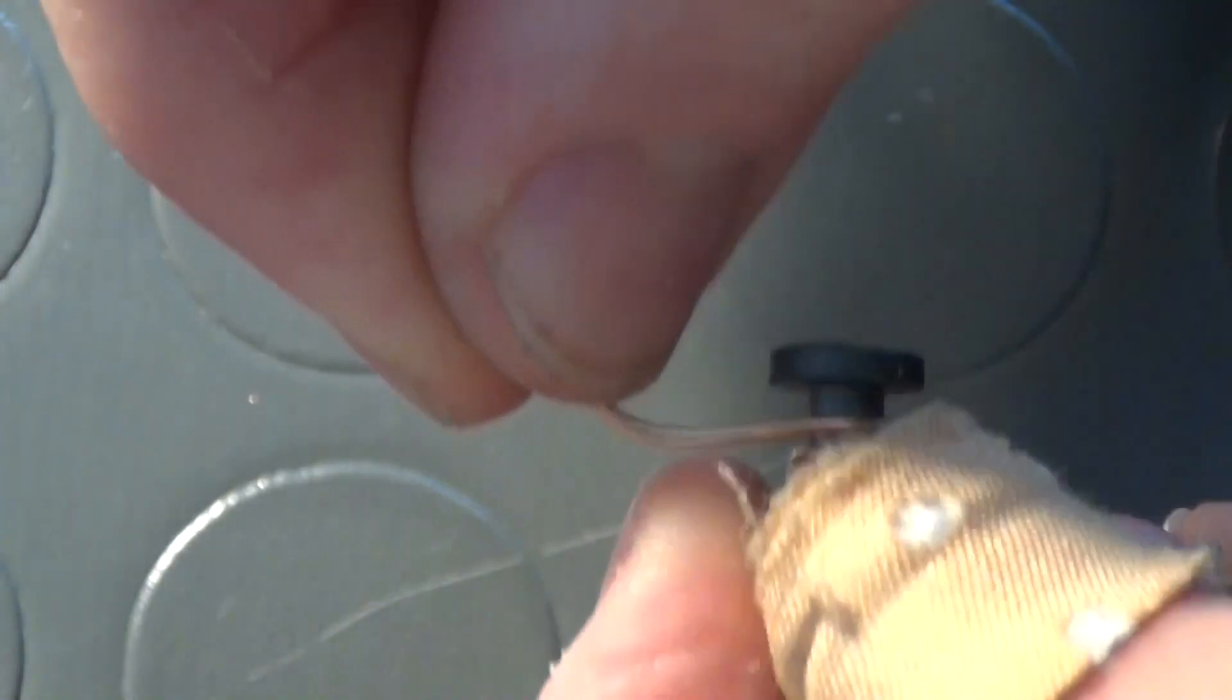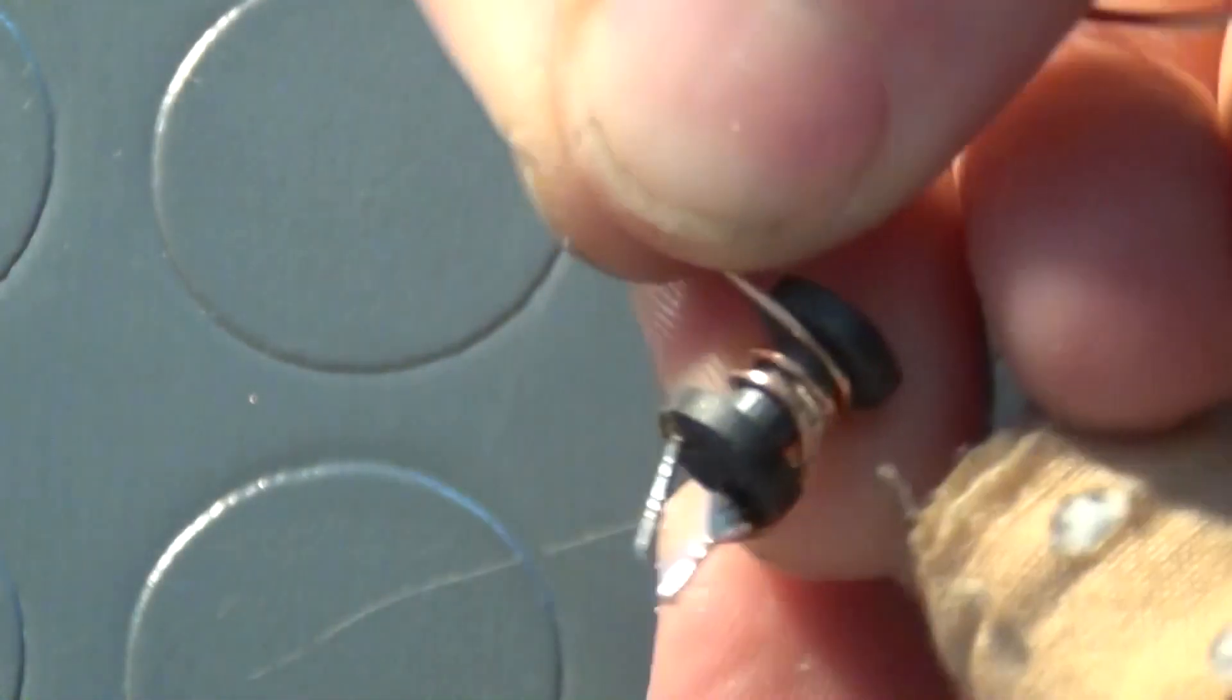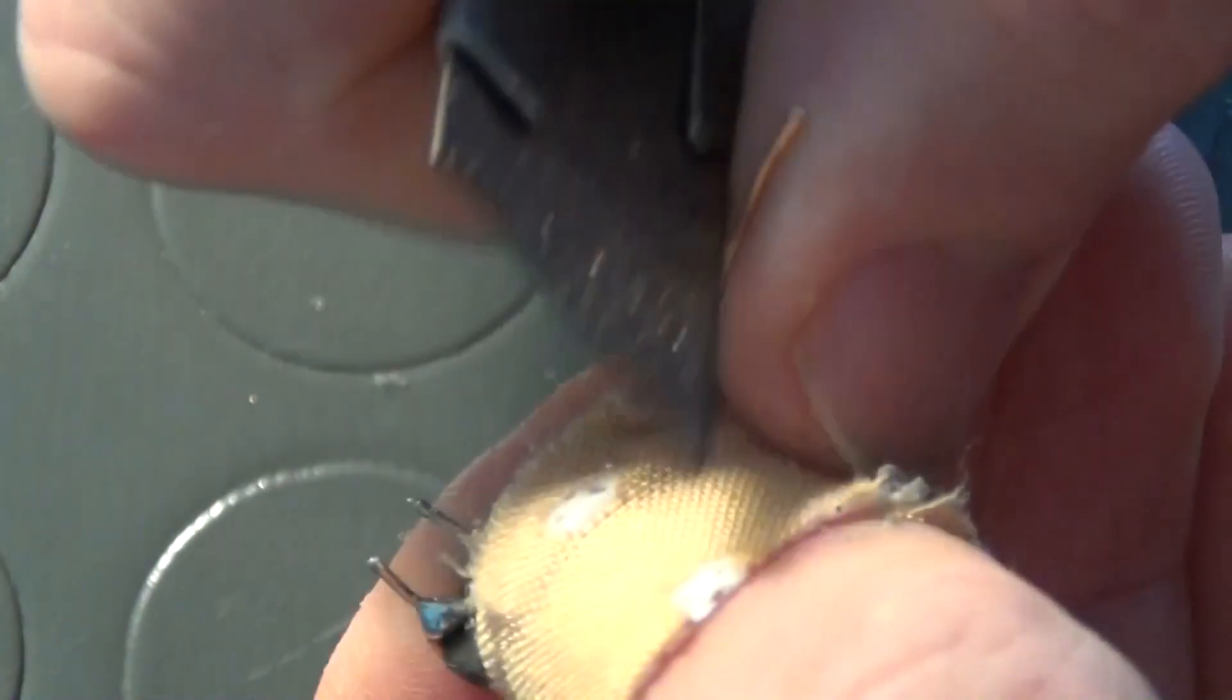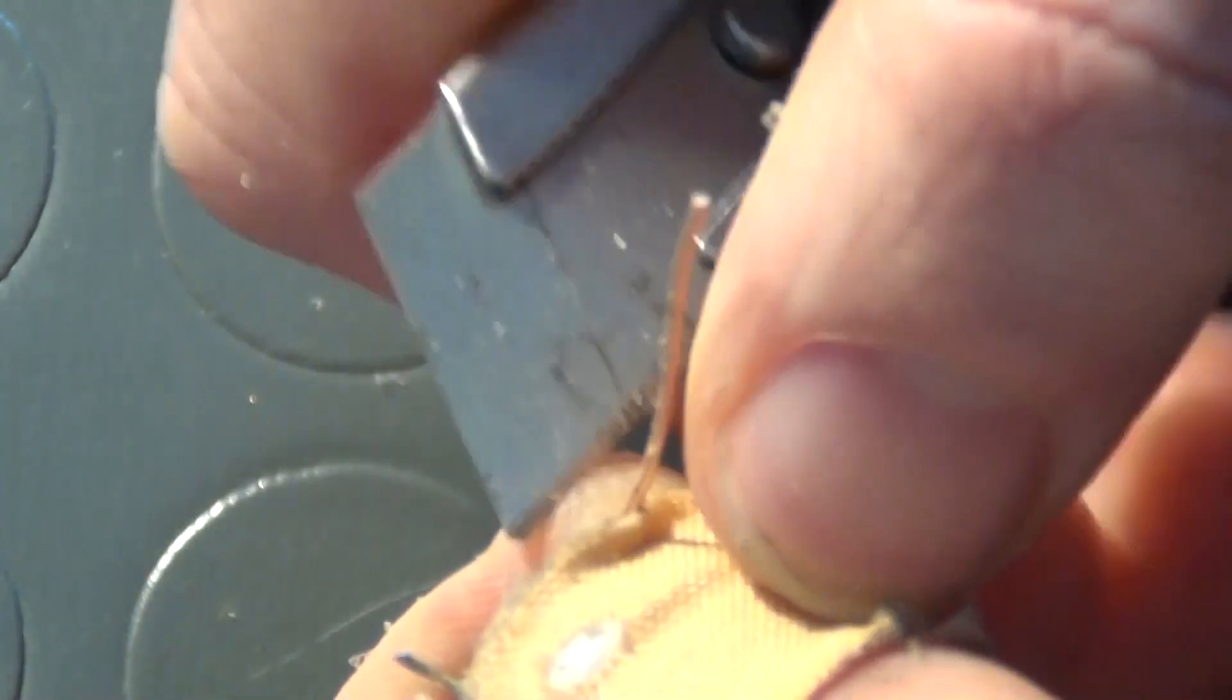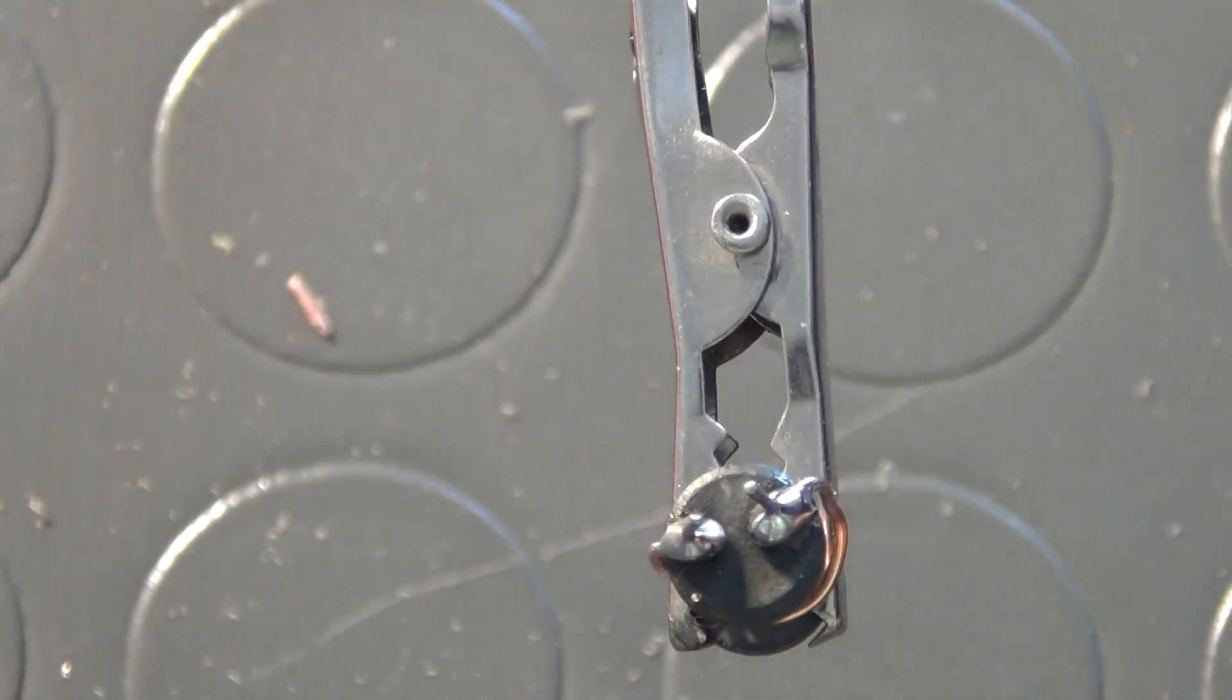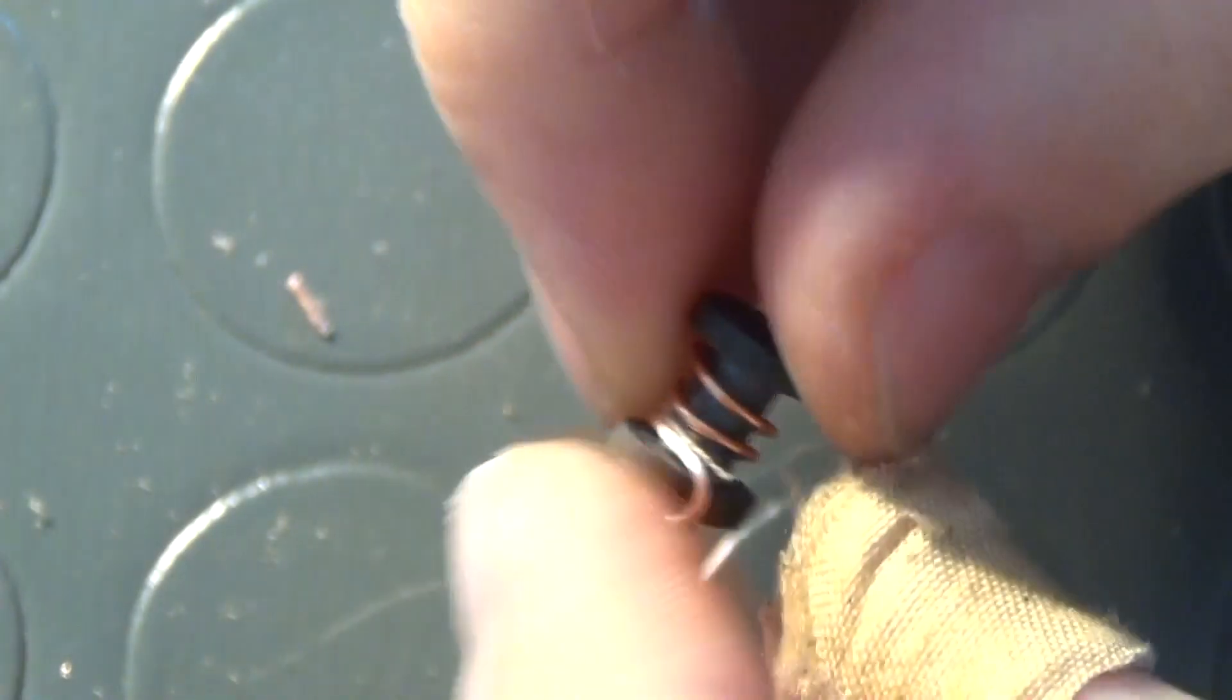Once this is done, wind two to three turns of 1 mm magnet wire around the ferrite core and scrape off the insulation at the ends of the magnet wire. And finally, solder them to the pins at the bottom of the ferrite core. A new choke is now completed.